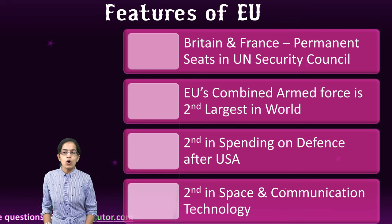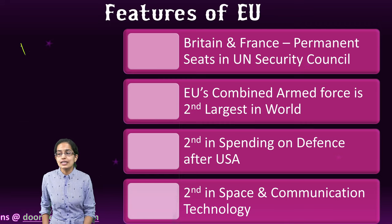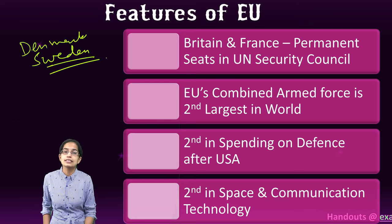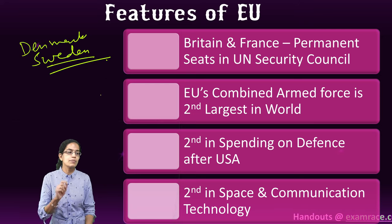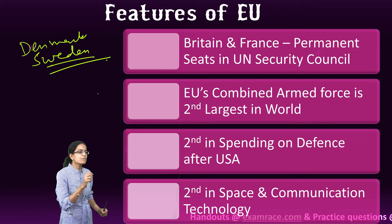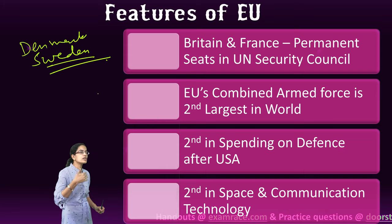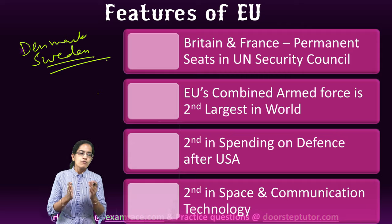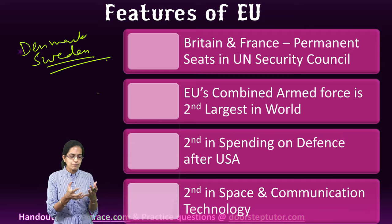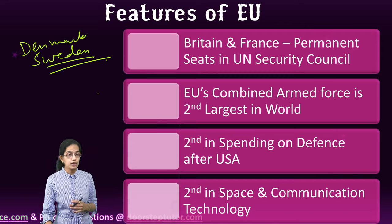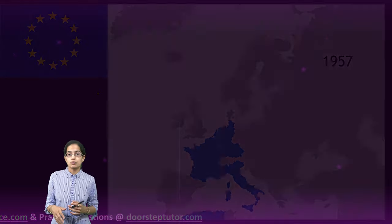Countries like Denmark and Sweden were nations that had resisted the Maastricht Treaty and later the adoption of the common currency, which was the Euro. Matters of foreign trade and defense have also been very important within the European Union.